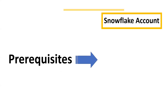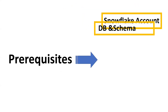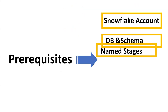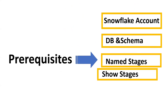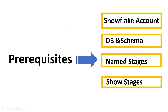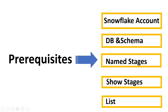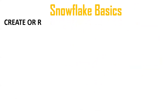To understand this concept you should have a better understanding of the following: one Snowflake account, one development database, one schema, and named stages. You should know how to see stages using the SHOW STAGES command and the LIST command. You should know how to create a named stage, how to see a list of stages, and how to see the files.